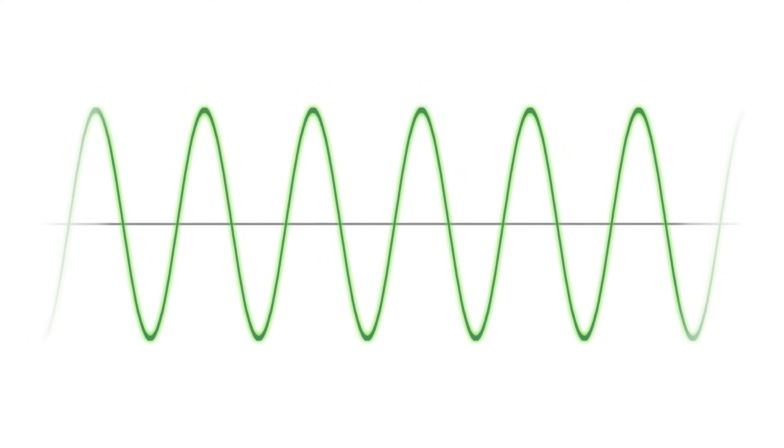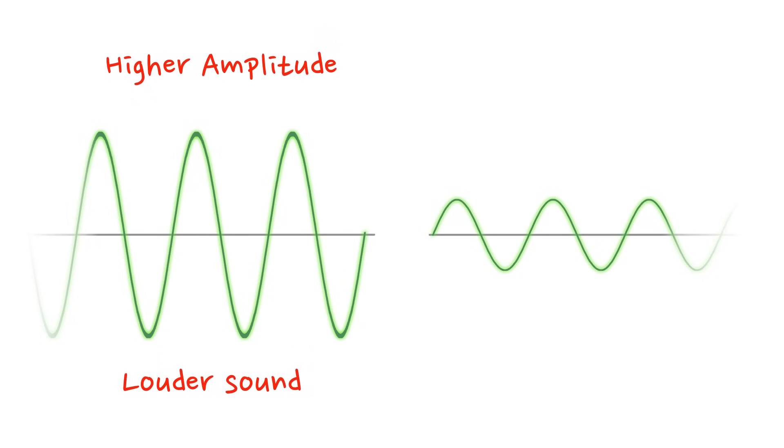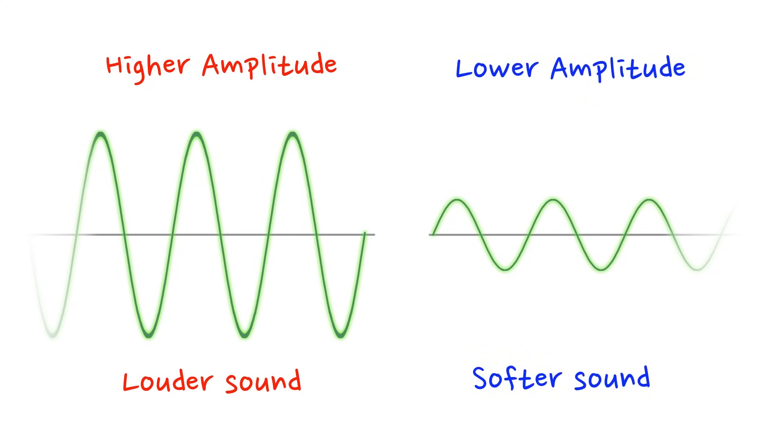Another important thing to notice about transverse waves is their height. The height of the wave is telling us the amplitude, and when we're talking about sound waves, a greater amplitude basically means a louder sound. So by contrast, if we've got a less tall wave, then we have a softer sound.